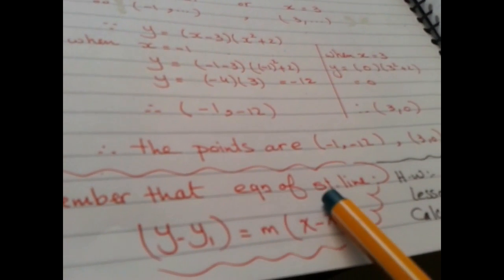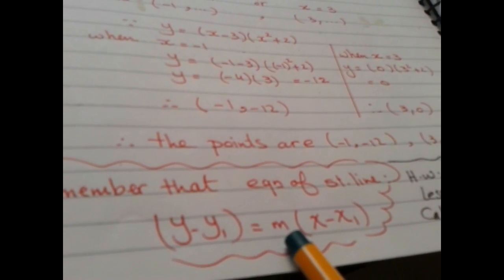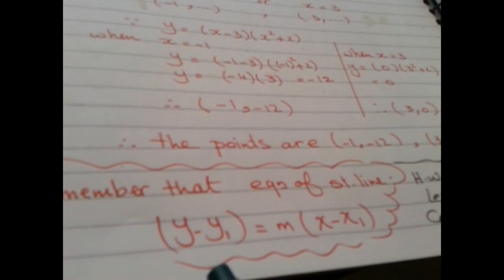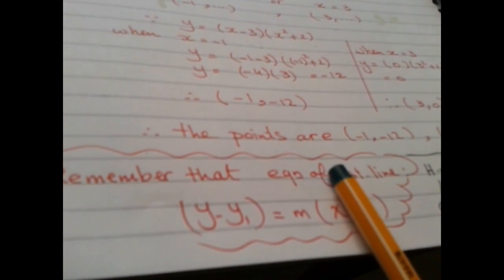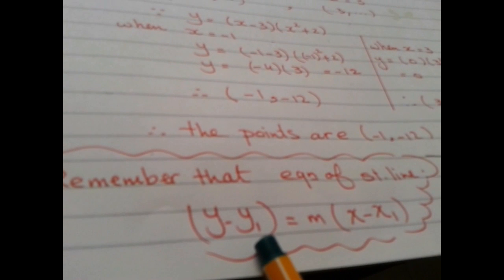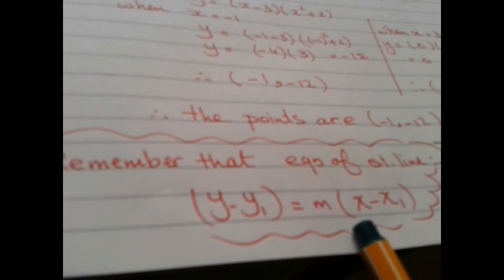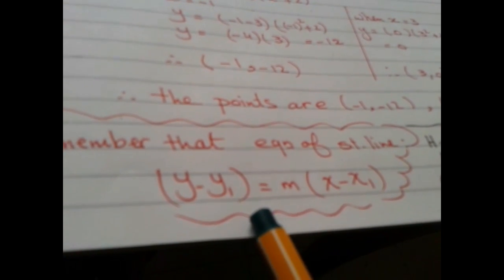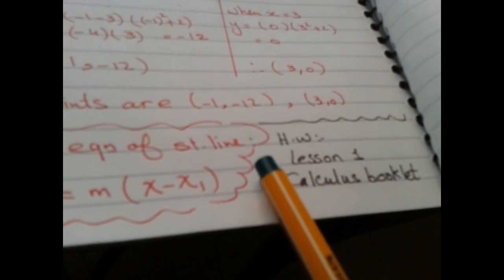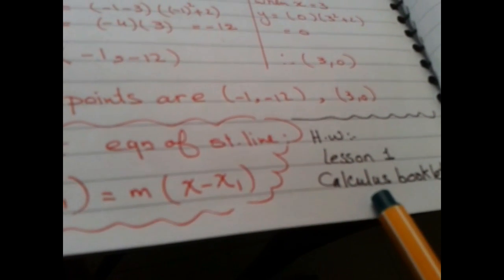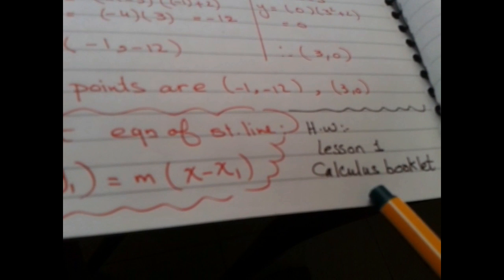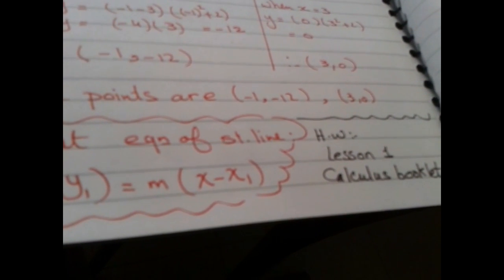Remember that the equation of any straight line is y - y₁ = m(x - x₁), where you substitute the point (x₁, y₁) and the slope m. You can use this to find the equation of the tangent in the homework. Our homework is based on this lesson — Lesson 1 in the calculus booklet. I will send you the model answer soon, inshallah. I hope you can understand this lesson. Goodbye and see you soon in the next video.